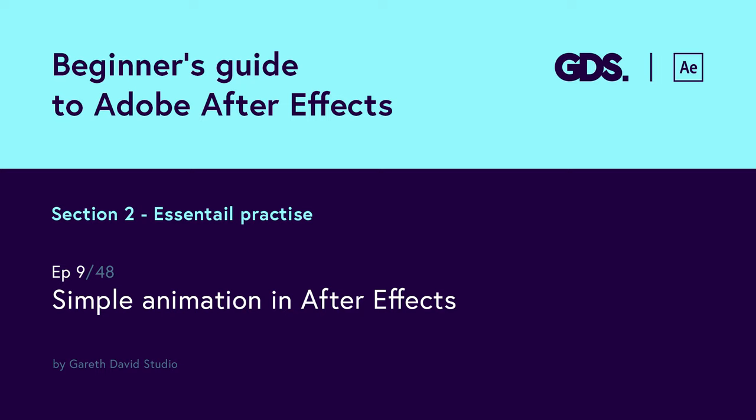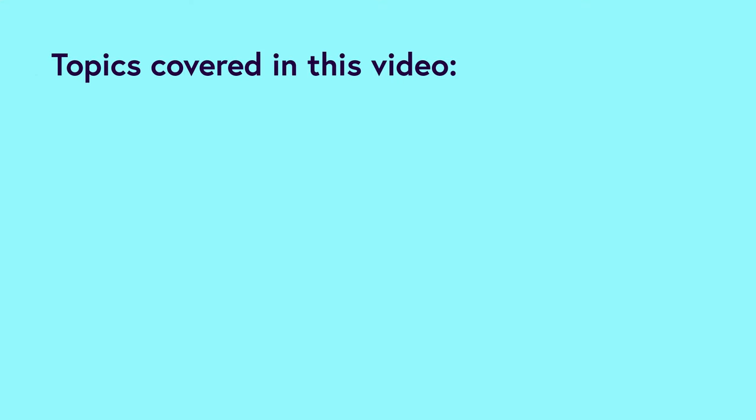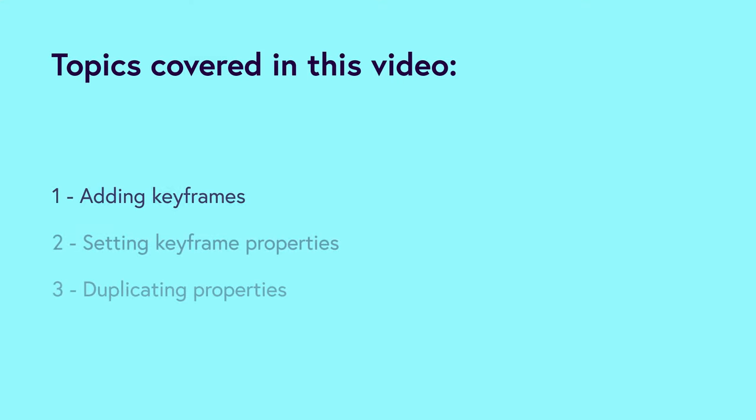Hello and welcome to the ninth video in this beginner's guide to Adobe After Effects. In this tutorial I'm going to demonstrate how you can create a simple animation in After Effects. In a previous episode we learned about keyframes and how they are used to create animation sequences in After Effects. Now it's time to get more hands-on with keyframes. In this video we are going to be covering: adding keyframes, setting keyframe properties, and duplicating properties. After this video you will have a good understanding of how to use keyframes to animate.